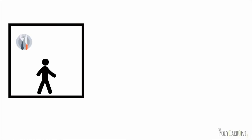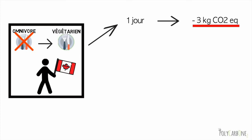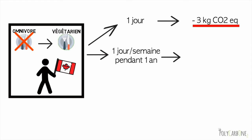Il y a donc plusieurs façons de réduire l'empreinte environnementale de notre alimentation. Par exemple, le végétarisme est une façon très efficace de réduire notre empreinte sur les changements climatiques. Au Canada, une personne omnivore qui mange végétarien pendant un jour réduit ses émissions de gaz à effet de serre de 3 kg de CO2 équivalent. Si elle effectue ce remplacement une fois par semaine, c'est 175 kg de CO2 équivalent en moins par an.